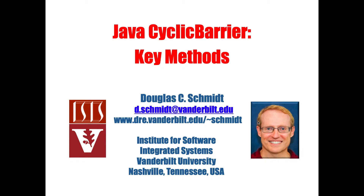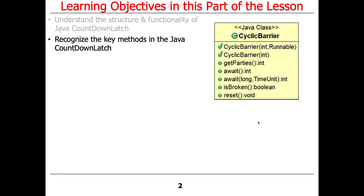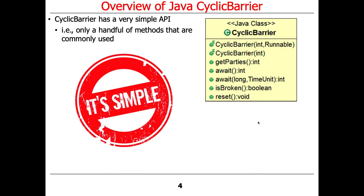Now that we've talked about the structure and the functionality of Java CyclicBarrier, let's walk through its key methods. As you can see, like CountDownLatch, CyclicBarrier also has a very simple API, and only a handful of its methods are commonly used — most particularly the constructor and the await method, as we'll see.